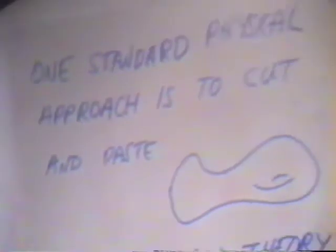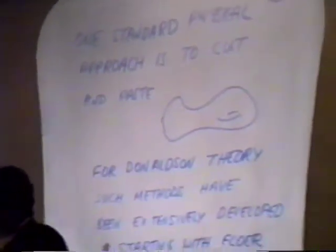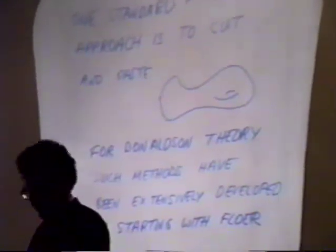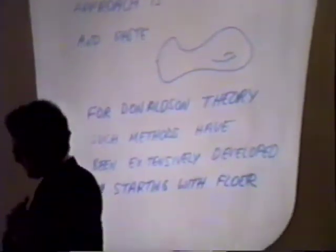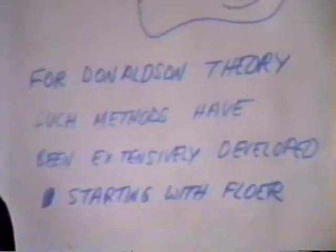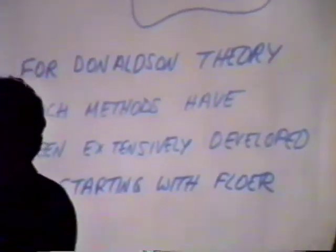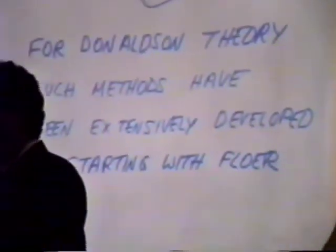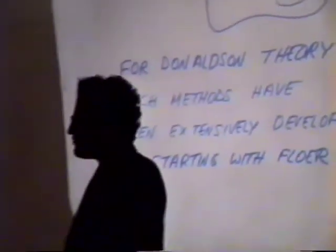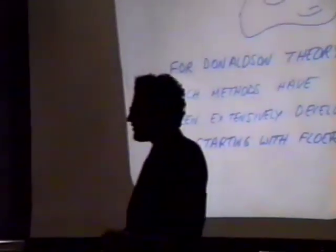When I first thought about this problem in the late 80s, partly in collaboration with my student Scott Axelrod, we tried to cut and paste and sum over physical states. But for Donaldson theory, such methods have been extensively developed, starting with Floer. And after a long peregrination, we eventually concluded that we could learn nothing essentially new.